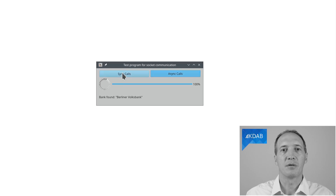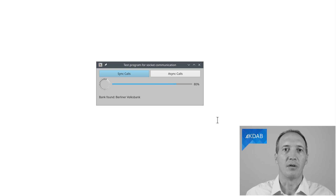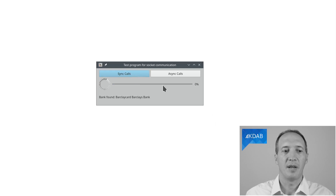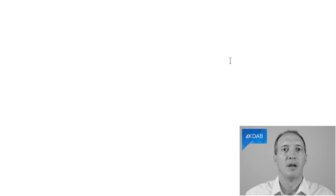If I trigger synchronous calls, then as you can see, the animation on the left does not actually update. And if I try to resize the window while this is happening, the program isn't really answering. That's because it is blocked waiting for answers from the server. Same thing if I try to close the application while this is happening — the processing of the click on the close button does not happen until we are done with all of the 10 calls and going back to the event loop.